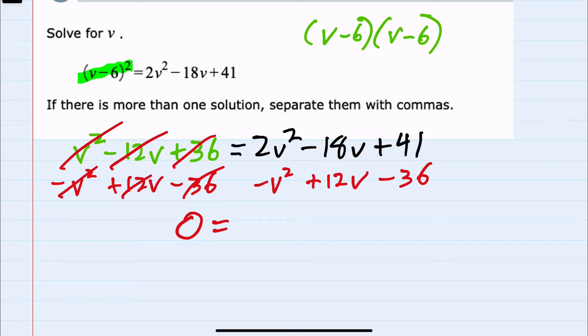2v² minus 1v² is just v². Minus 18v plus 12v is minus 6v. And 41 minus 36 is plus 5.